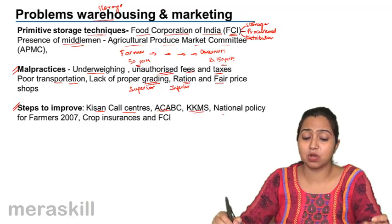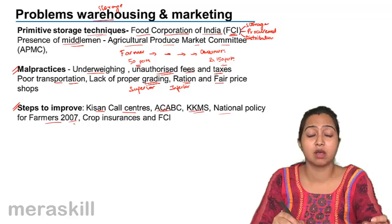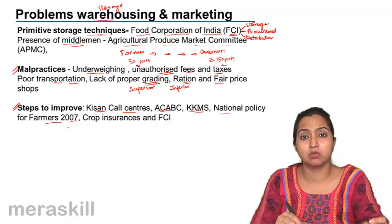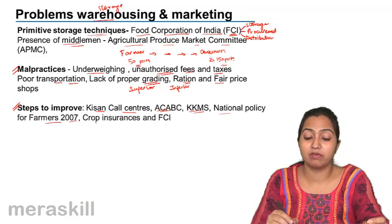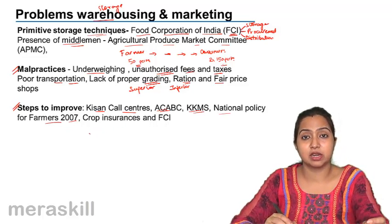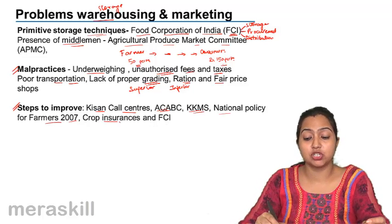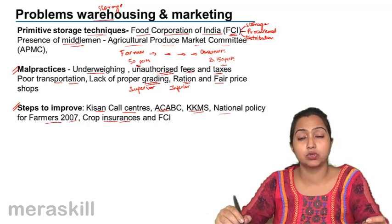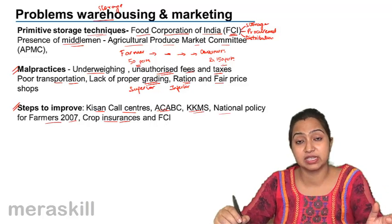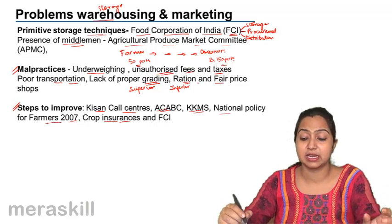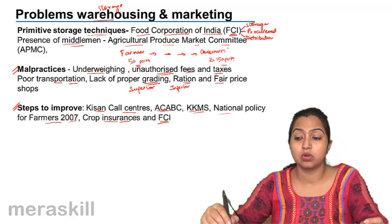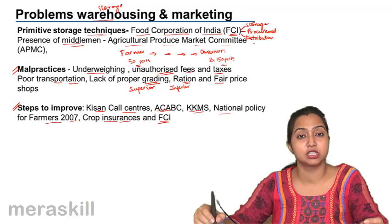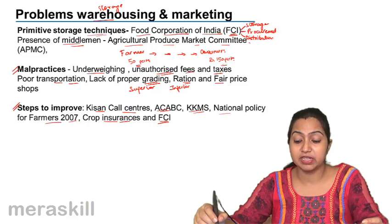KKMS and the National Policy for Farmers have been introduced to help farmers use rainwater more effectively, adopt new technologies for better produce, and become more aware of surrounding markets for a good price. Crop insurance ensures that if a crop gets spoiled, the farmer does not suffer a setback. FCI — Food Corporation of India — plays a very important role in storage, procurement, and distribution, saving crops from getting spoiled.